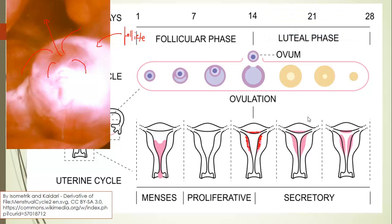Then later on in the menstrual cycle, that endometrium will become even thicker. But if there is no pregnancy, that lining will be lost — down through there in the menses phase as we go back to the start of the menstrual cycle during menstruation. So it's all about timing.